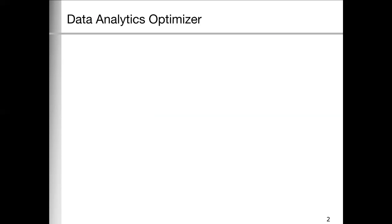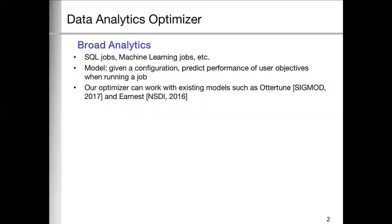To be a good data analytics optimizer, we think it has to be capable of two things. The first is broad data analytics. It means that it can support diversified tasks, such as SQL jobs, machine learning jobs. The key issue here is a performance prediction model. Given a configuration, the model can predict the performance objectives.